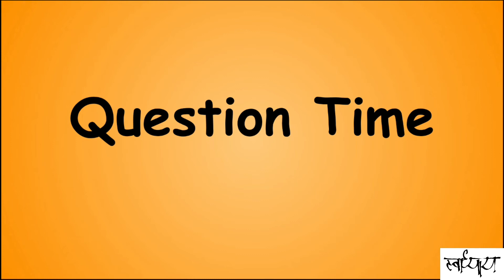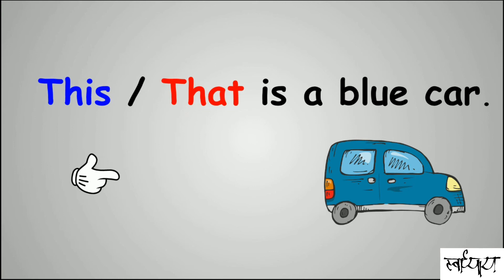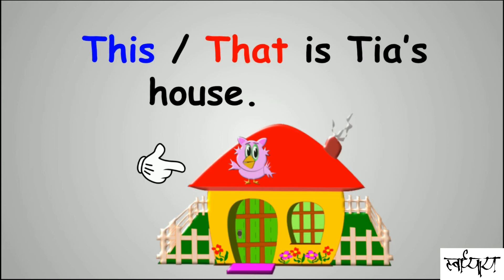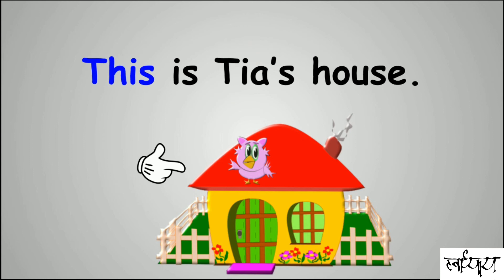Now that you know where we should use the words 'this' and 'that', try to give the answers. That is a blue car. This is Tia's house.